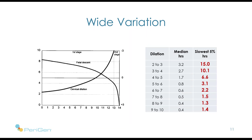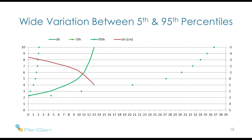Looking at this graphically: the green line represents the median or average pattern of dilation over time, and the green shaded area represents the fastest five percent to the slowest five percent — and that range is very wide. There are 39 hours on the horizontal axis. I've put four-hour and six-hour arrows there so you can see what those intervals of time that we currently use to define an arrest of dilation look like in comparison to the natural variation in labour patterns. Well, that's a problem.